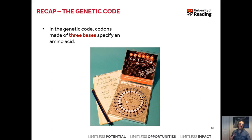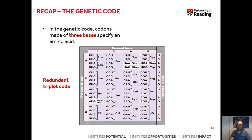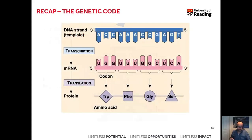In order to understand the types of gene mutations and their consequences, we need to revisit the genetic code. The codons in the genetic code are made of three bases in a specific order. Our triplet code is redundant and is used at the level of DNA, mRNA, and also during the process of translation.